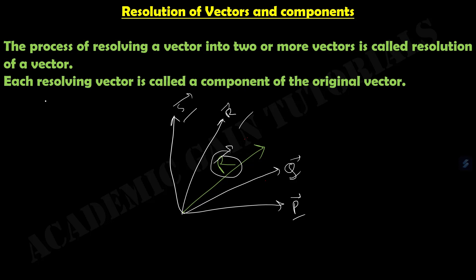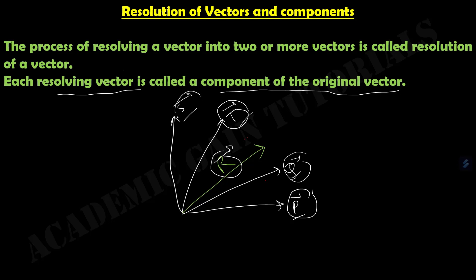Each resolving vector is called a component of the original vector. So p, q, t, and s will be the components of the original vector r. This is known as the component of the r vector. This is one of the most important lessons of the vector series, and we should understand what resolution of a vector and its components are in order to better understand our vector series further.